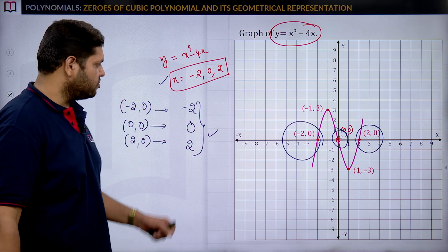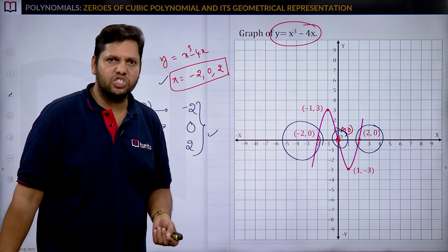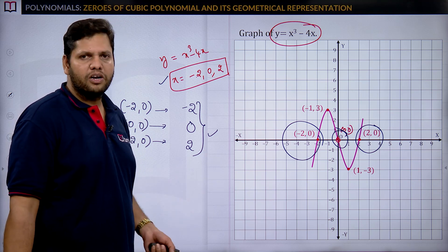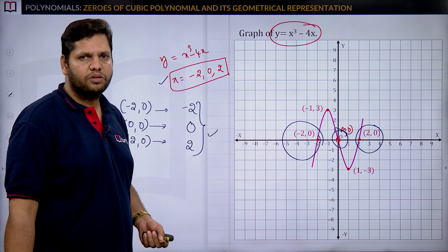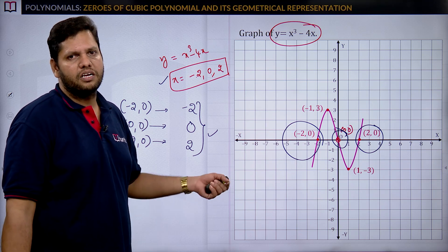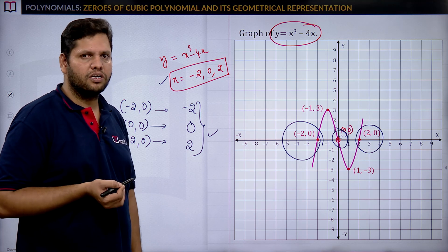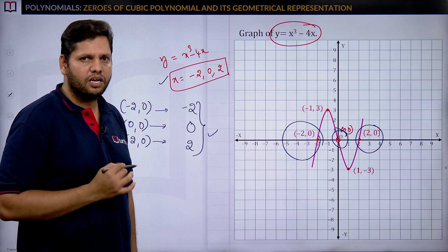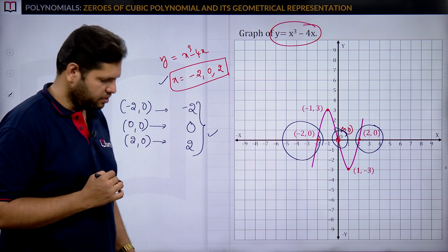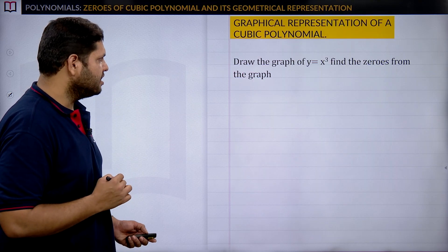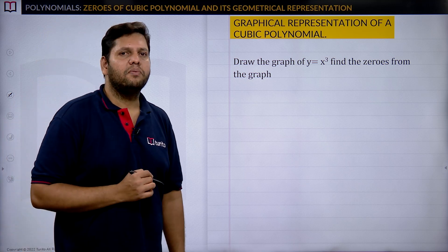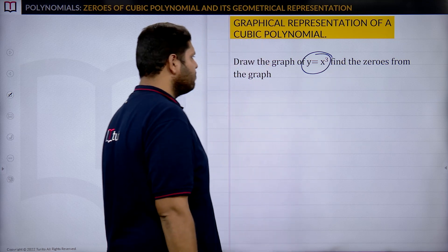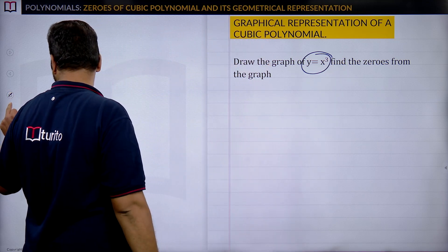For a quadratic polynomial we can always say the shape is a parabola, but for a cubic polynomial we cannot define any particular shape. Now let us look at another example: y = x³. We need to draw the graph and find its zeros.